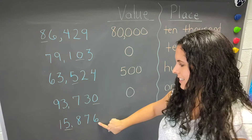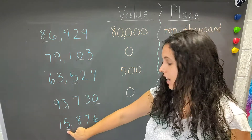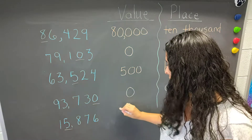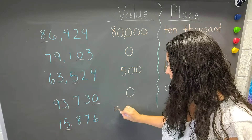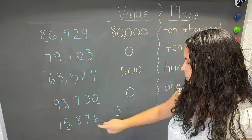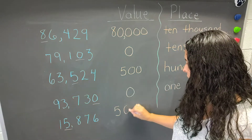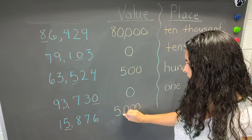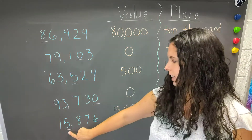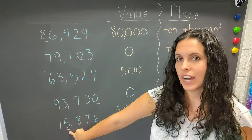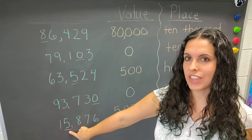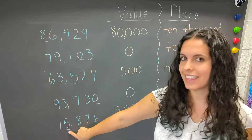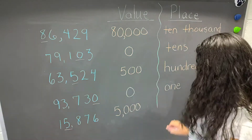15,876 — the five is underlined, so we write the five. There are one, two, three zeros going. The value of the five is 5,000, because it is in the thousands place.